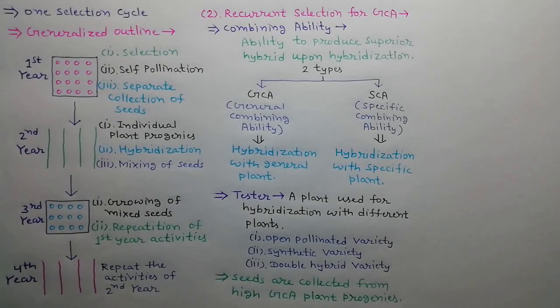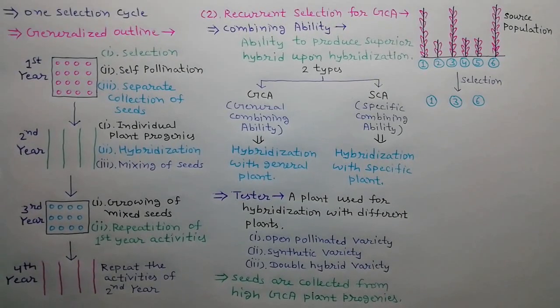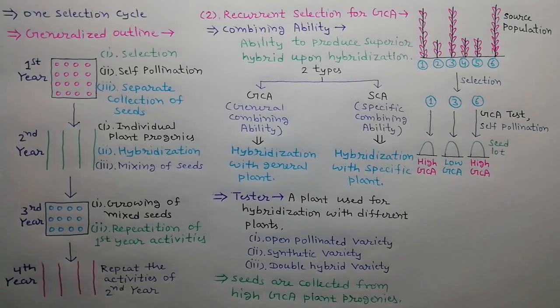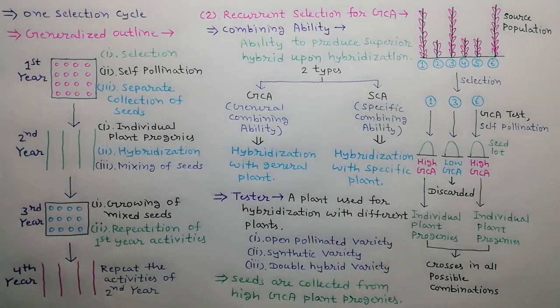In recurrent selection for GCA, seeds are collected separately from self-pollinated plants that show high GCA, and these seeds are used to develop individual plant progenies. Suppose there are six plants in a source population; plant number one, three, and six are selected as superior. GCA tests are performed while self-pollination is also allowed on the same selected plants to obtain small seed lots. Seed lots with high GCA are used to grow individual plant progenies while low GCA seed lots are discarded. Crosses are then allowed in all possible combinations. These five steps constitute one selection cycle, and two or more cycles are repeated in recurrent selection for GCA.